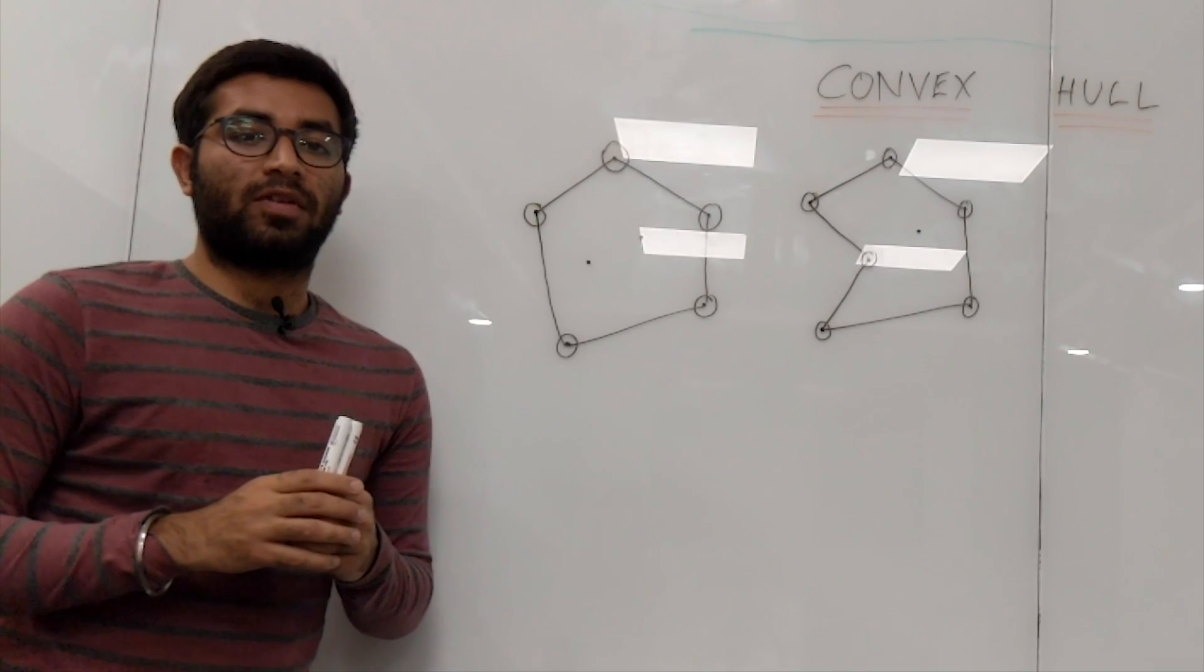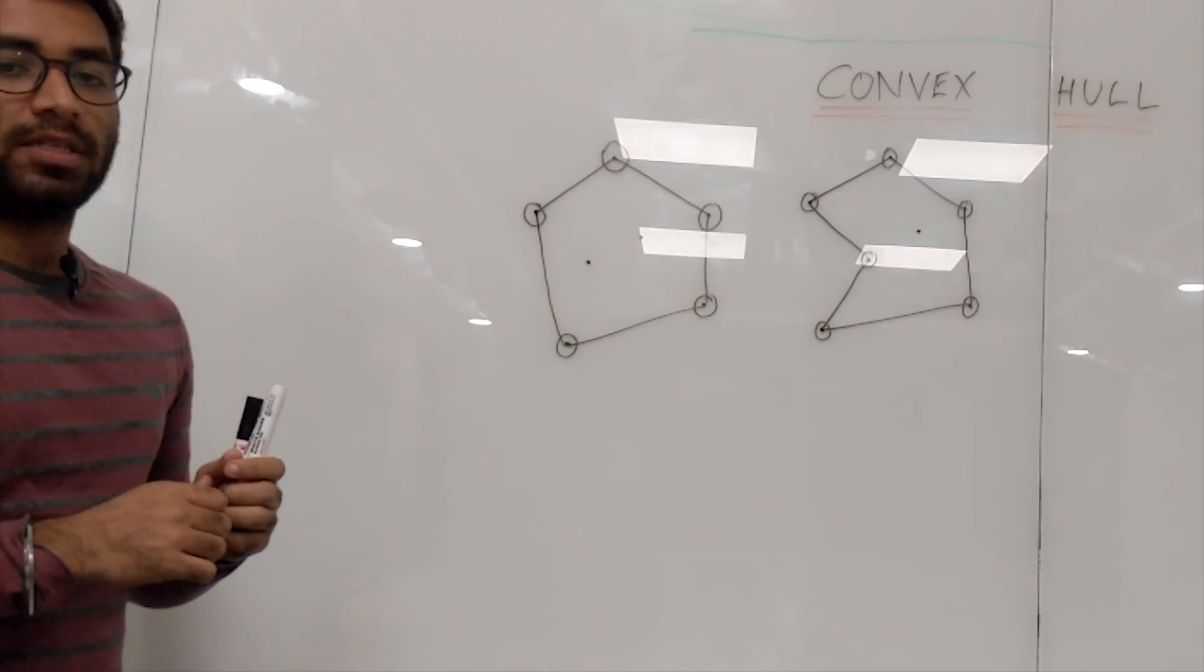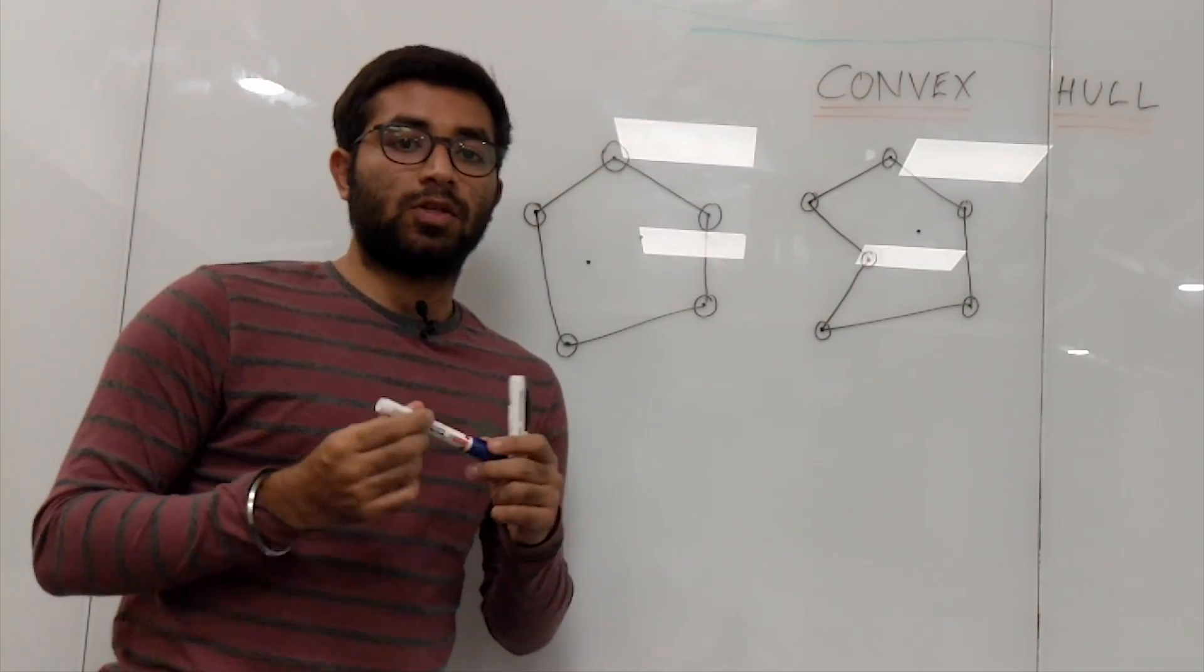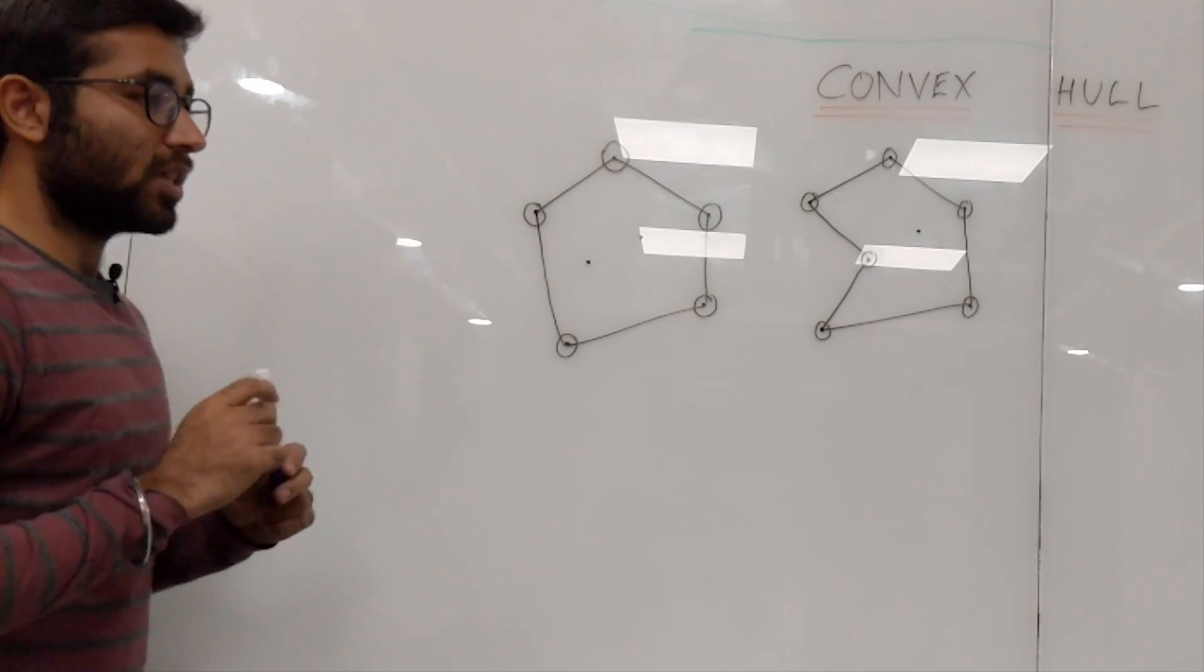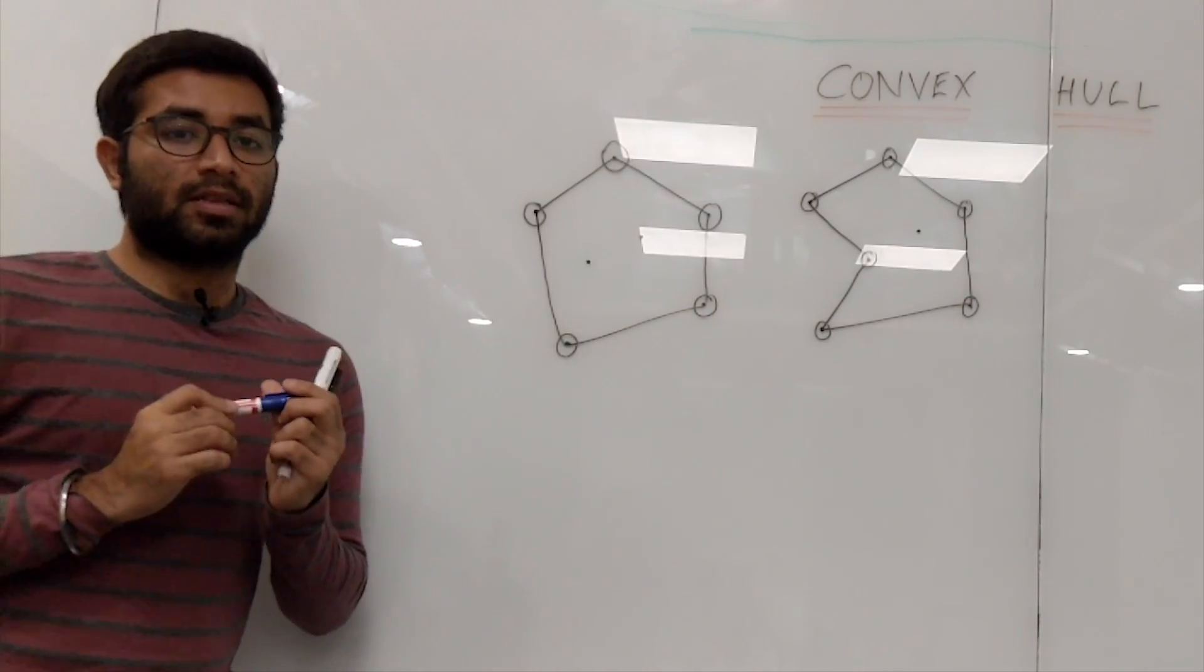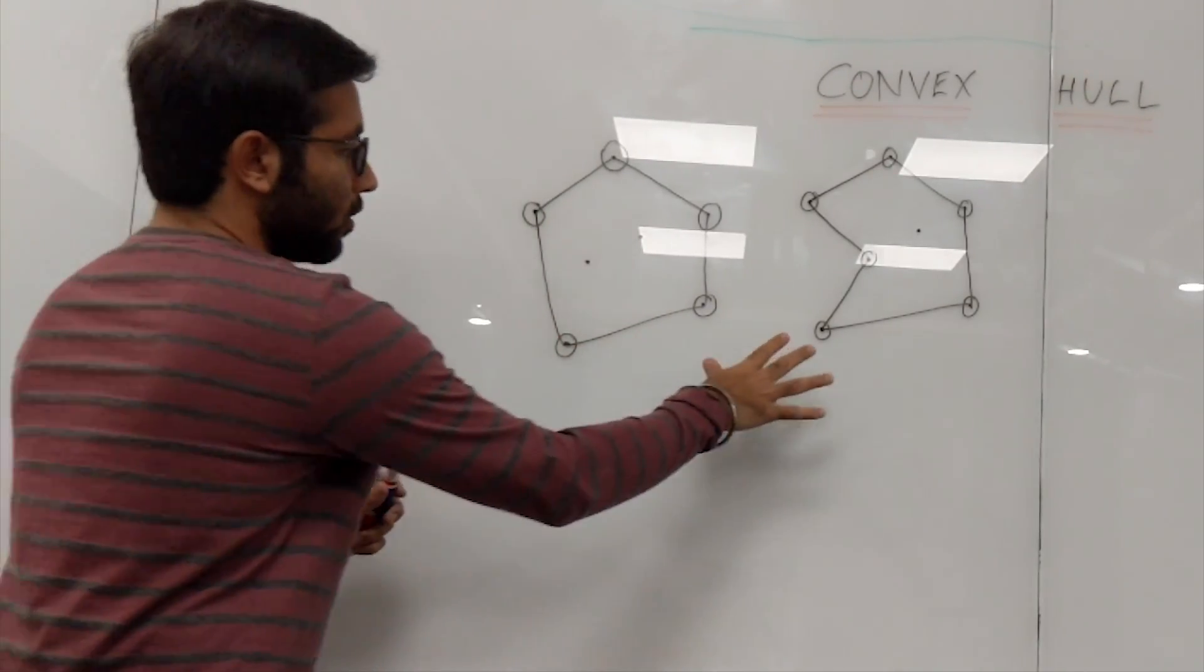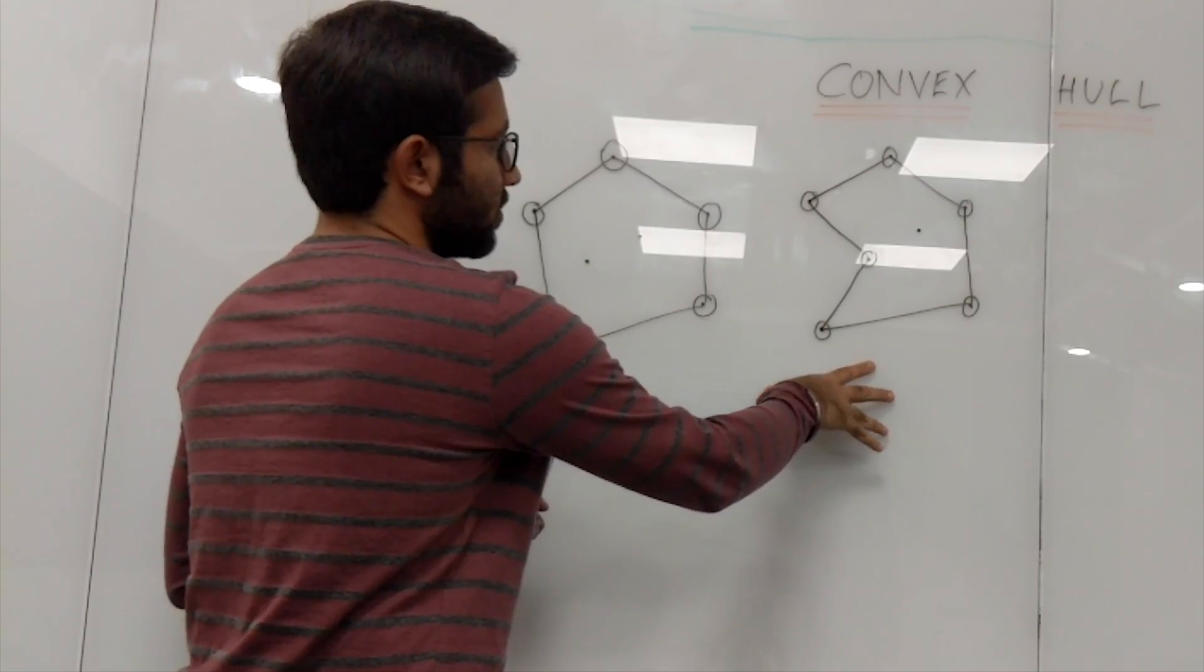Today we'll be discussing convex hull. Let's suppose we have a set of points in space. A convex hull is the smallest convex polygon which covers all these points, that is, all the points are bounded within this particular polygon. Here I have drawn two polygons. Both polygons cover all the points which are listed, but the major difference between them is this one is convex, while this one is not.